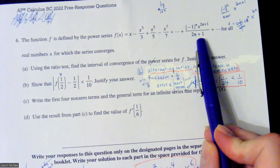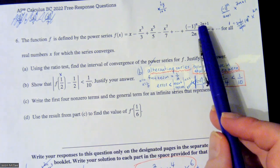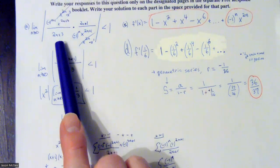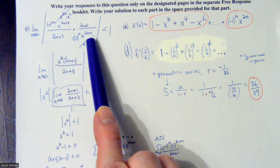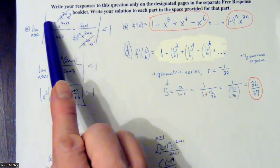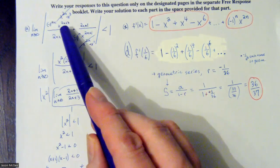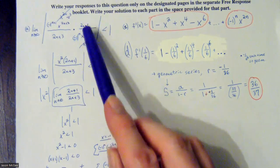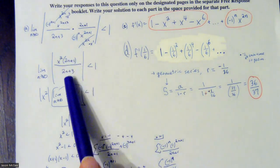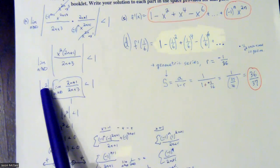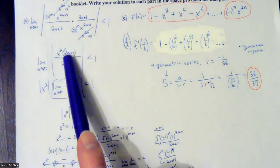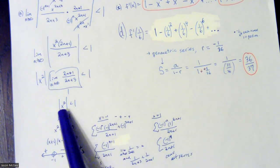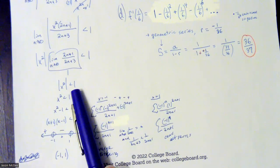We're going to use the ratio test: take the limit as n approaches infinity, put absolute value bars around it, replace all the n's with n+1 to get a sub n+1 divided by the original — which means multiply by the reciprocal. The absolute value bars handle the negative signs. You can rewrite it as x to the 2n times x to the third over x to the 2n times x to the first. The x to the 2n terms cancel, and everything else carries down. We pull the non-n terms in front and take the limit — the degrees are the same, so that's just 2 over 2, which is 1.